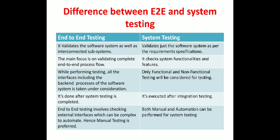While performing end-to-end testing, all interfaces including the back-end processes of the software system are taken into consideration. In system testing, only functional and non-functional testing is considered. In end-to-end testing, all components are considered — including back-end, database, and network. In system testing, there are two types: functional and non-functional testing, which are performed as per the requirement.